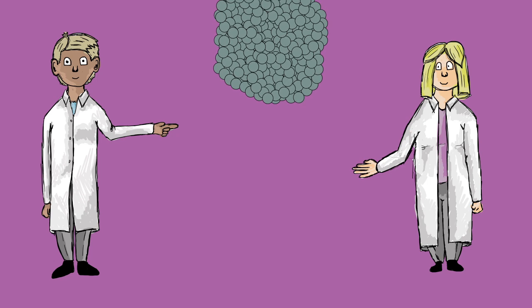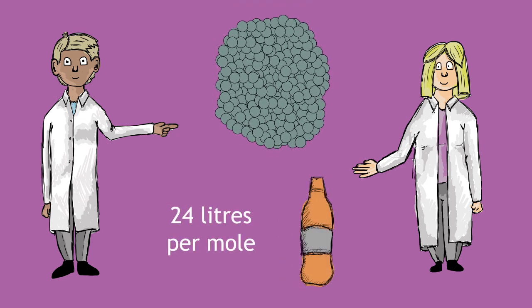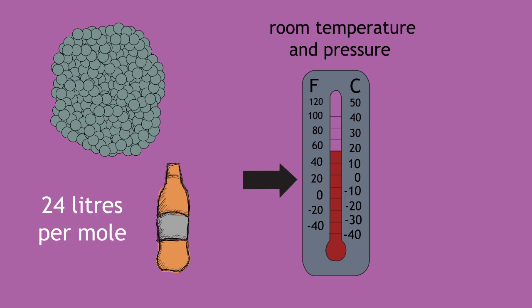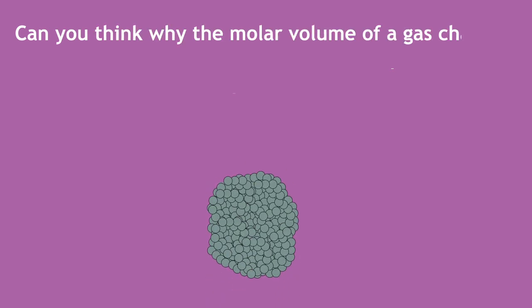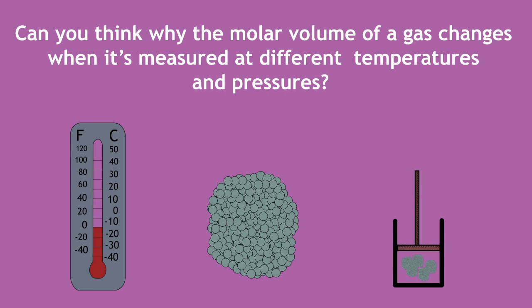Scientists also quote molar gas volumes at 24 litres per mole, but this is at room temperature and pressure, which is 20 degrees centigrade and 1 atmosphere pressure. Can you think why the molar volume of a gas changes when it's measured at different temperatures and pressures? Pause, think, and continue when you're ready.